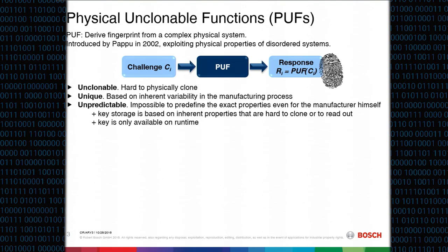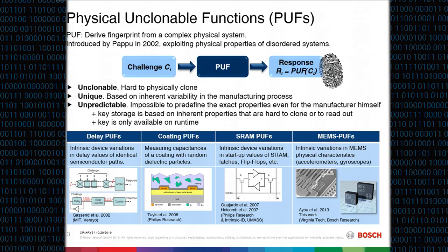Basic properties of a PUF are that it must be unclonable, unique, and its behavior must be unpredictable. From a security perspective, the key storage is based on inherent properties that are hard to clone or read out, and the key is only available at runtime. Examples of proposed PUF types include delay PUFs, coating PUFs, SRAM PUFs, and MEMS PUFs — the focus of this work — which use variations in MEMS physical characteristics.